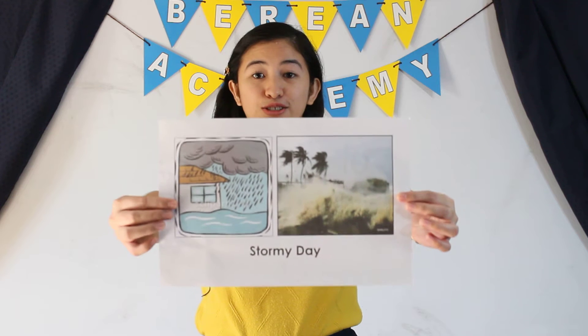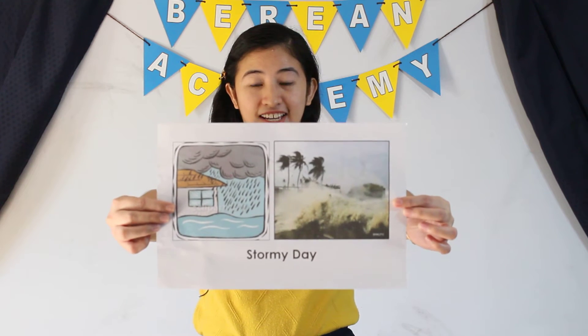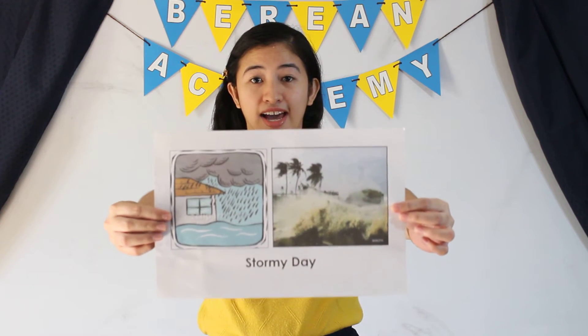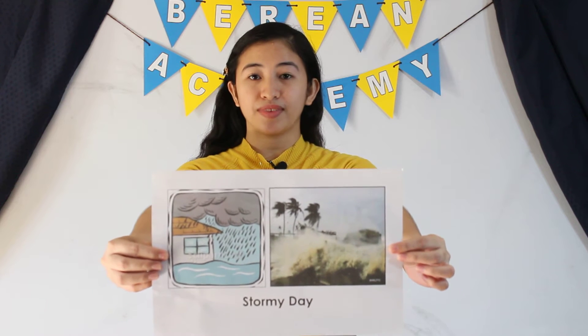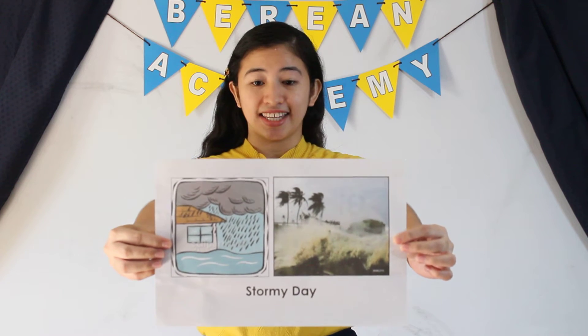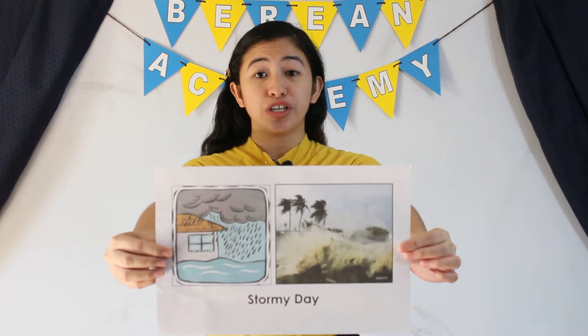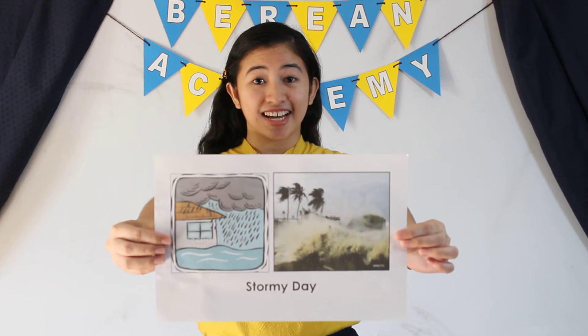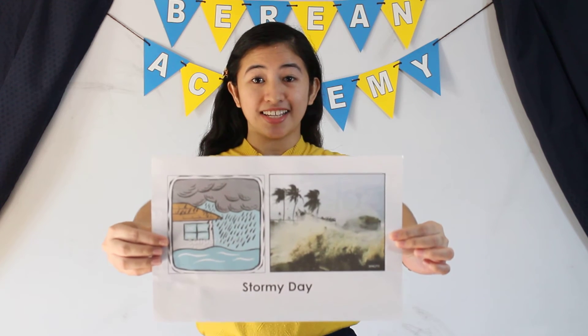And lastly, we have the stormy day. Stormy day is when the sky is dark and there is thunder and lightning. We usually stay inside our houses during stormy days. This is a stormy day.